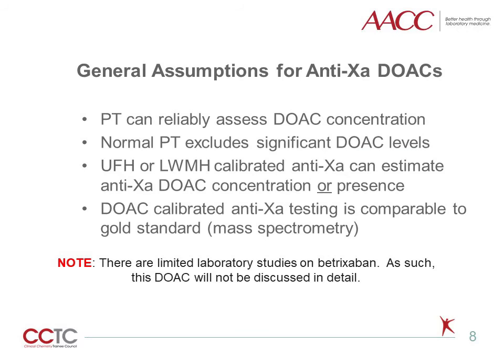Based on clinical and laboratory literature, there are a number of presumptions that have been made regarding the laboratory assessment of anti-Xa DOACs. These include: number one, the prothrombin time can reliably assess anti-Xa DOAC concentration; number two, a normal prothrombin time excludes significant anti-Xa DOAC levels; three, the use of heparin drug-calibrated anti-Xa tests to estimate anti-Xa DOAC concentration or presence; and finally, that drug-calibrated anti-Xa DOACs are substantially equivalent to mass spectrometry measurements. This presentation will explore whether each of these presumptions are true.